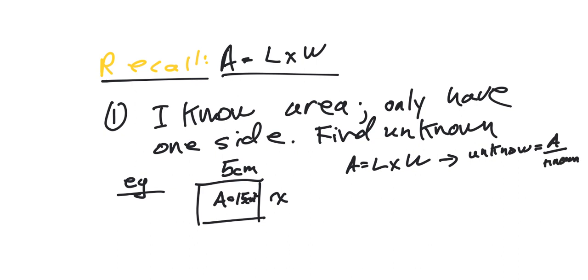In this case, the unknown side I called it X, and that's equal to my area, which is 15 centimeters squared, divided by 5 centimeters. And that gives us our final length being 3 centimeters.